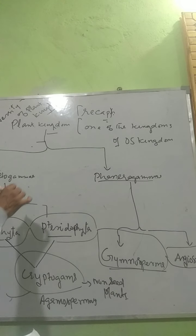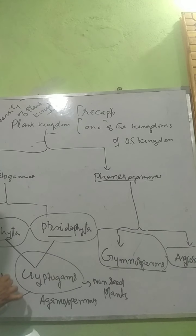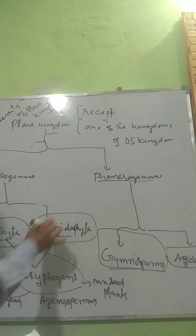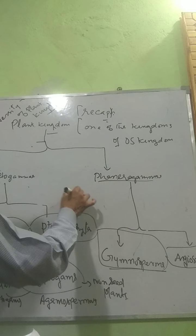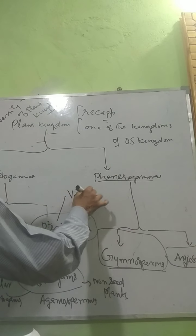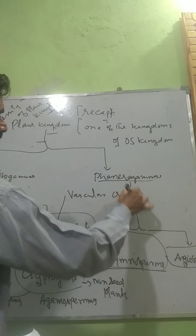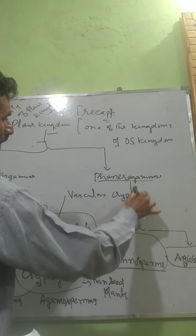Bryophytes are also called non-vascular cryptogamous, and Pteridophytes are called vascular cryptogamous.